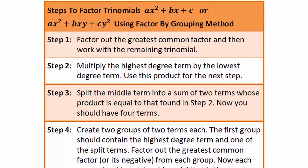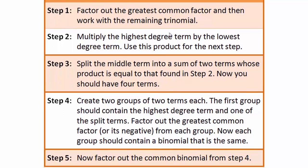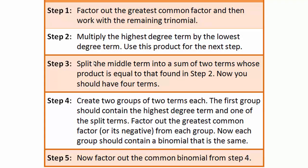Here are the steps to factor trinomials of the type ax squared plus bx plus c, or ax squared plus bxy plus cy squared, using the factor by grouping method. First, always factor out the greatest common factor, then work with the remaining trinomial. Next, multiply the highest degree term with the lowest degree term. Then find two numbers that multiply to give you that product but add to give you the bx term. Finally, factor by grouping to finish it off.